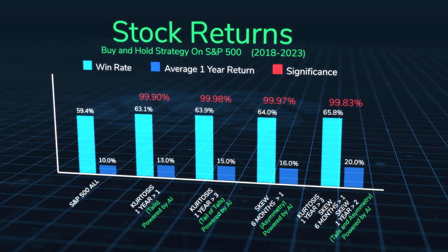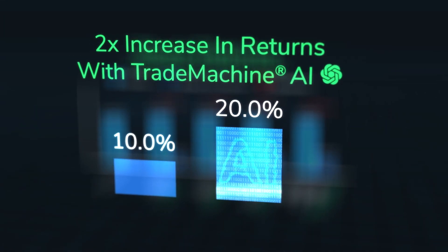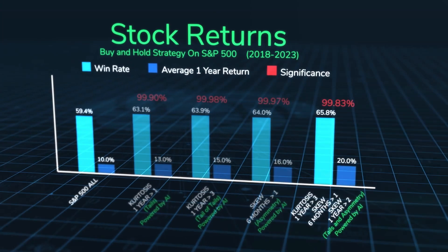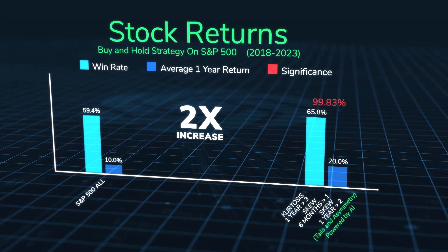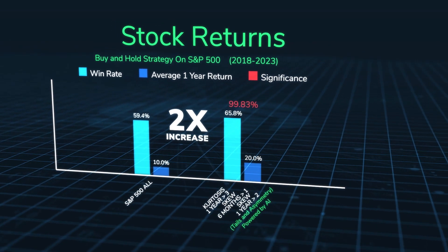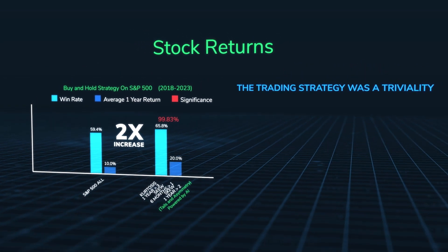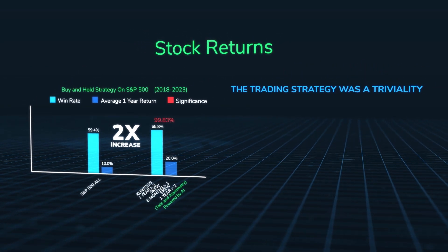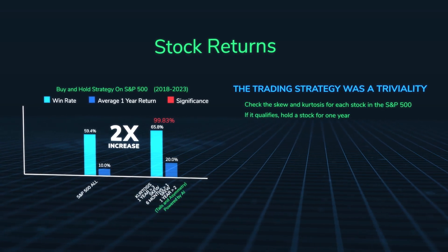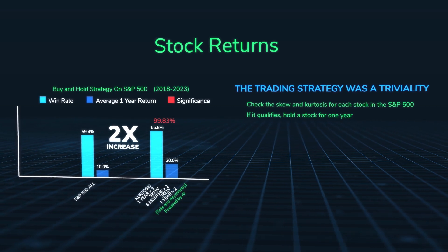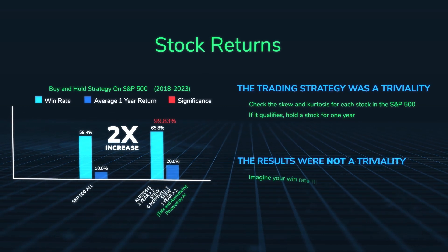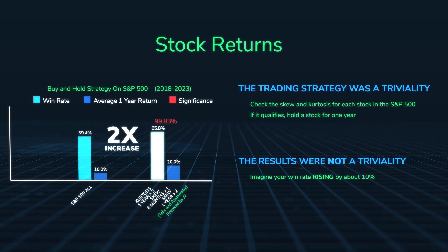With very strong statistical significance, as we kept adding return distribution characteristics, win rates went up and returns went up. Remember when I said I had not demonstrated that it matters? All I had done was demonstrate why it might matter — for stocks I have now demonstrated that it matters. The trading strategy was a triviality: I checked skew and kurtosis for each stock in the S&P 500, and if it qualified I held the stock for a year and did nothing else. It's the results that are not a triviality.